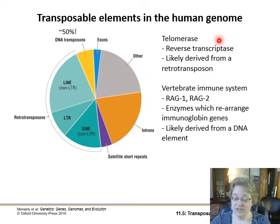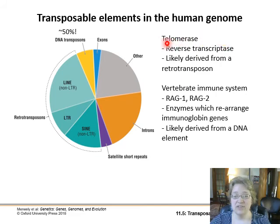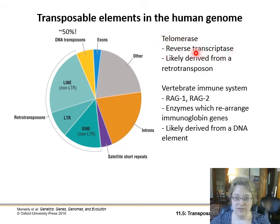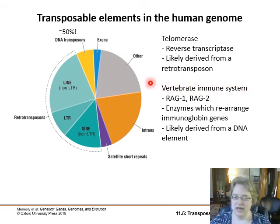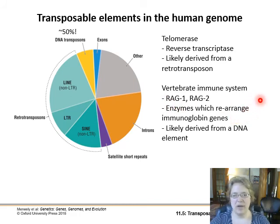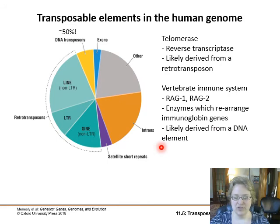A couple of good things have come from these transposable elements being inserted into our genome. Telomerase — the enzyme that allows us to extend the ends of our linear chromosomes — which is a reverse transcriptase, is very related to and likely derived from a retrotransposon. The vertebrate immune system has enzymes RAG1 and RAG2 that rearrange immunoglobulin genes to keep our response to foreign DNA sharp. These were also likely derived from a DNA element inserted back in the evolution of the immune system.